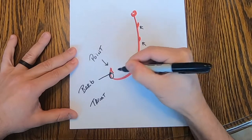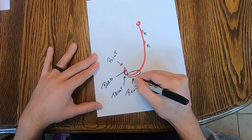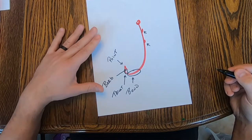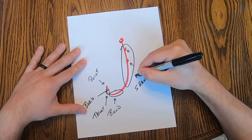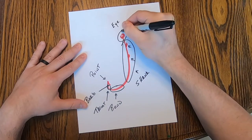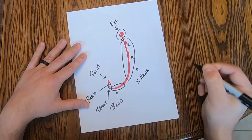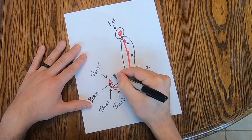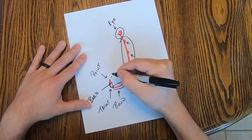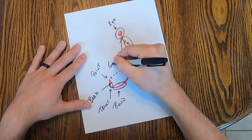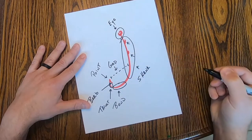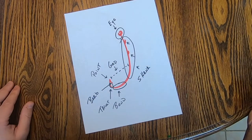Then you have the throat — the section of the hook running down from the point — which runs into the bend, where the hook curves back on itself, which runs into the shank, the same as the throat but on the blunt end of the hook, which runs up to the eye — the ring that attaches the hook to the lure or line. There are all kinds of different eye angles and positions for different applications. And then you have the gap — the distance between the throat and the shank, sometimes referred to as the wide gap or EWG, extra wide gap.